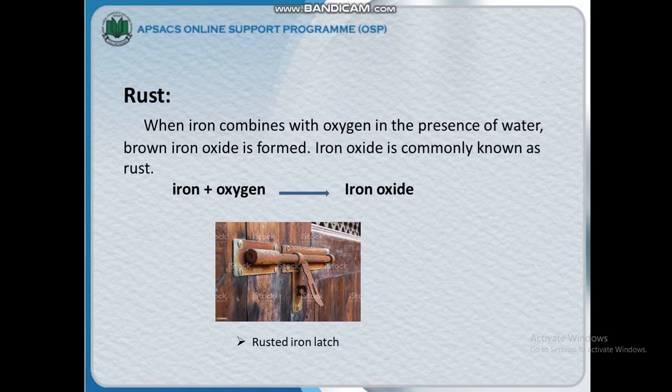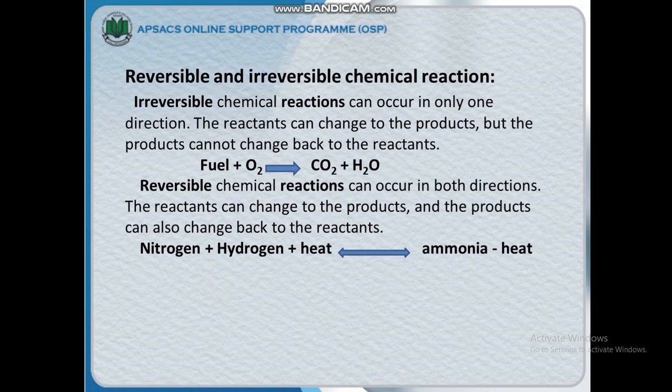What is rust? When iron combines with oxygen in the presence of water, brown iron oxide is formed. Iron oxide is commonly known as rust. The equation is: iron plus oxygen combines to make iron oxide.